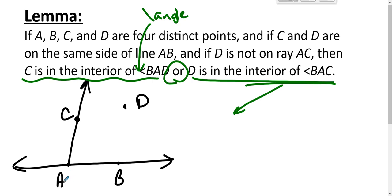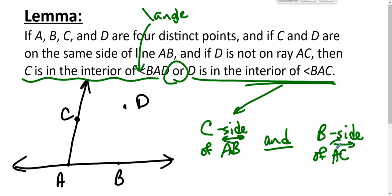The interior of angle BAC is the C side of line AB and the B side of line AC. So we want to show that D is in the interior of angle BAC, which means it's on the C side of line AB and on the B side of line AC.